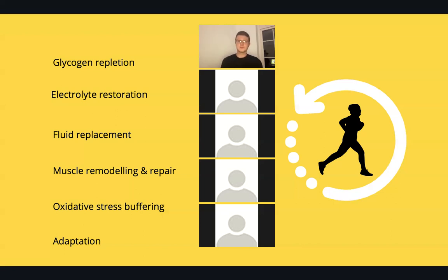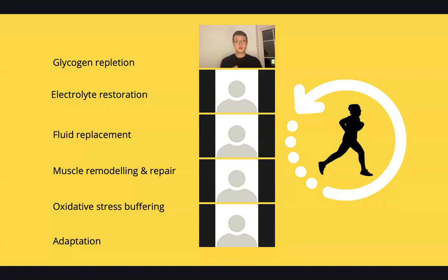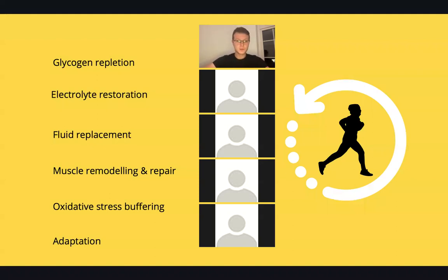For example, the difference between recovery on a race day versus a training day: you probably wouldn't suggest an athlete have lots of antioxidants, beetroot juice, or tart cherry juice in and around a training session, because it cuts off that oxidative stress stimulus and you don't get the same adaptive response from the work you're doing.